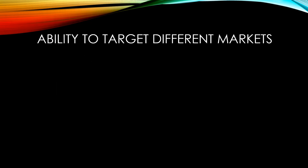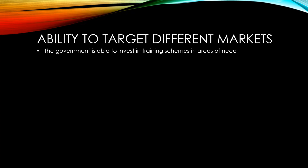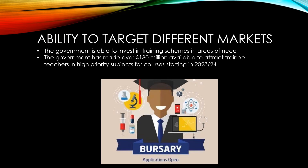The government is able to target its supply side spending on particular markets. For instance, the government is able to invest in training schemes in areas of high need. The government has recently made over £180 million available to help attract training teachers in high priority subjects such as maths and sciences for courses starting in 2023 and 2024. Meanwhile, spending on the HS2 project is designed to promote growth in the north of England by improving its links to the capital.